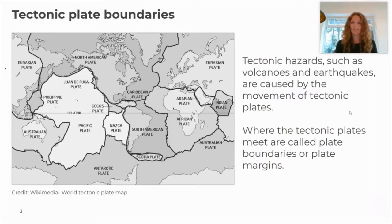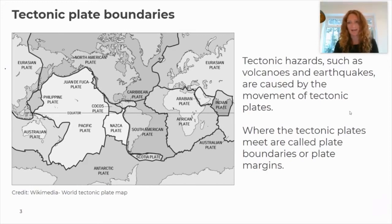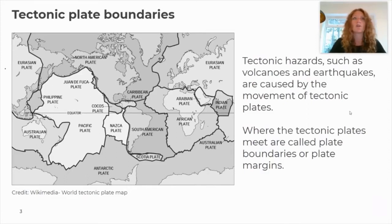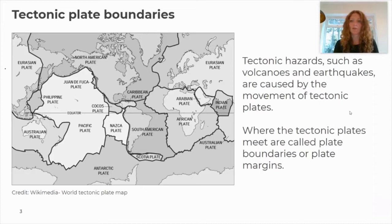What we're going to have a look at first is this idea of tectonic plate boundaries. We looked at tectonic plates last session — continental and oceanic plates — but this time we're going to think about what is going on where two plates meet one another. Where two tectonic plates meet is called the tectonic plate boundary, or plate tectonic margin. Those terms mean the same thing and can be used interchangeably. Tectonic hazards are caused by the movement of tectonic plates, and plate boundaries play a hugely important role in this.